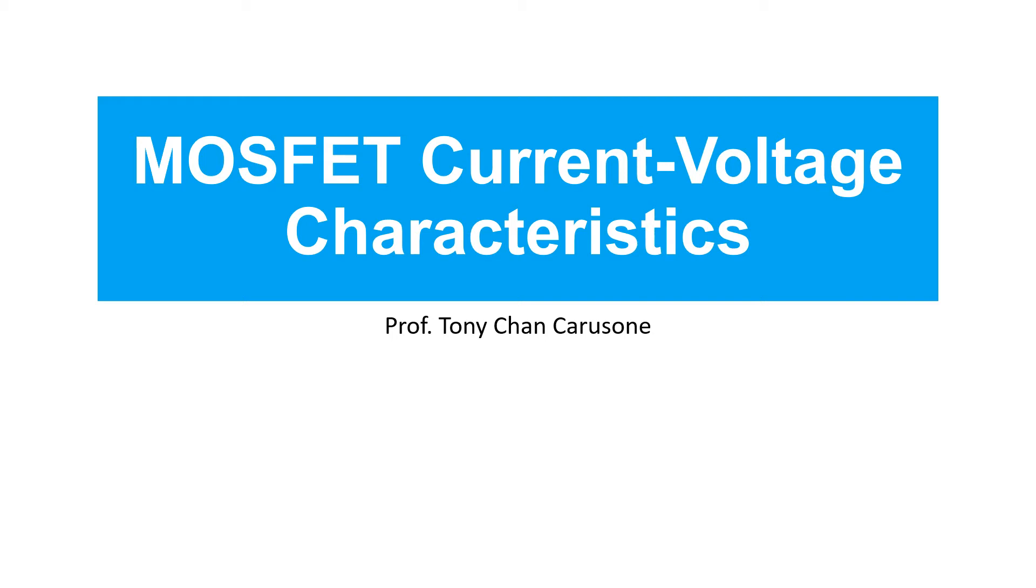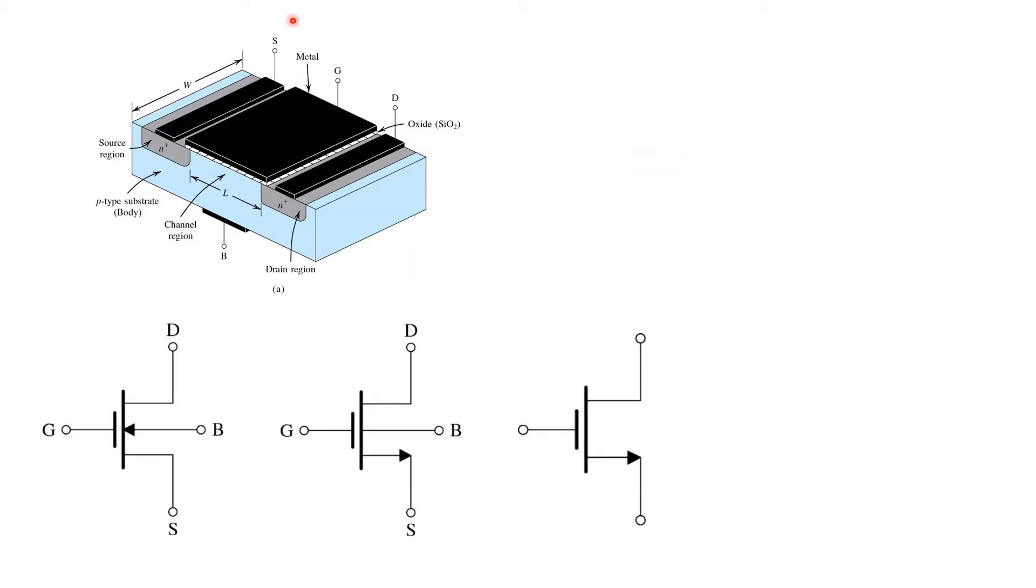In this video, we'll learn about MOSFET current-voltage characteristics. Shown here is a picture of an NMOS transistor, and down here are three different schematic symbols that may be used to represent it. They may all be used interchangeably. They're just different schematic representations of the same device.